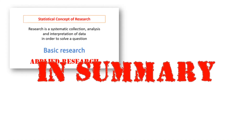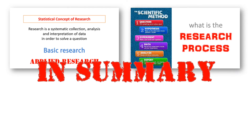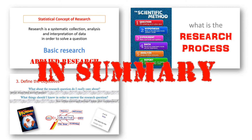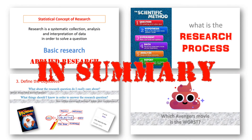Let's recap everything we've talked about. We've quickly defined what research is and defined the two broad categories of research. We've enumerated the steps in the research process, discussed the important considerations of each step, and the important questions we need to ask ourselves at each stage. Lastly, we've loosely tried to use the research process approach to address a pretty petty and self-serving problem.